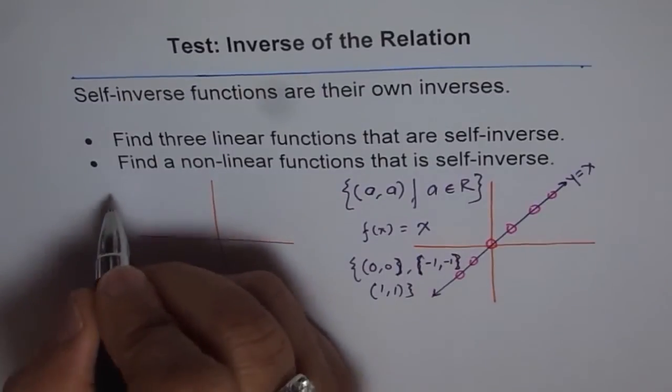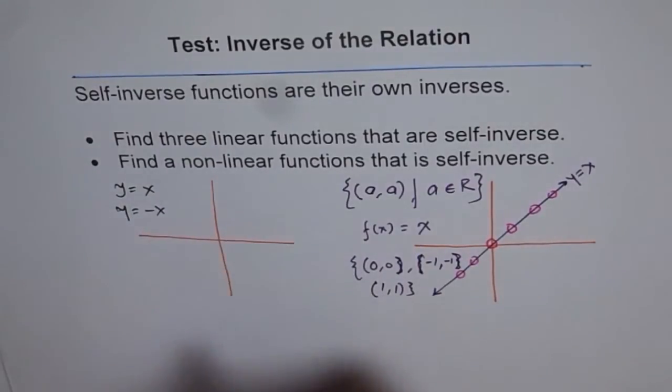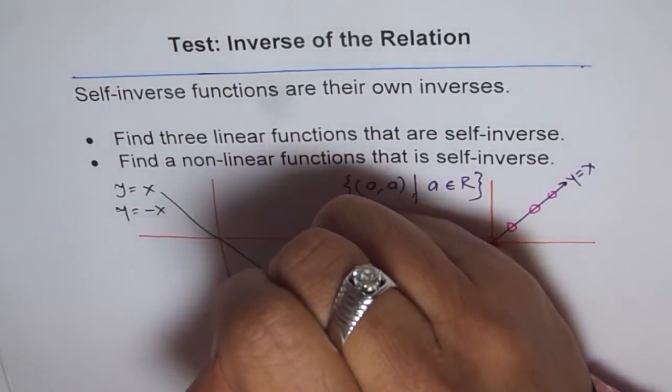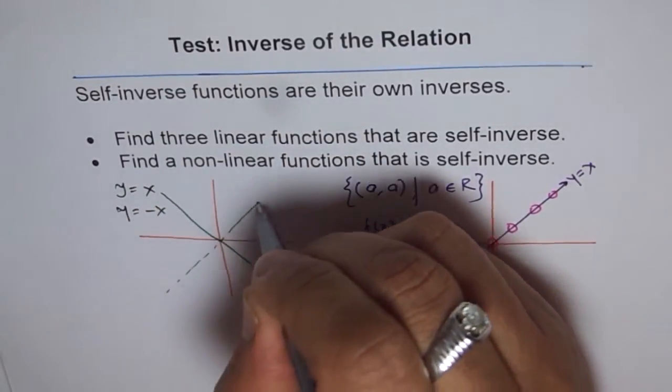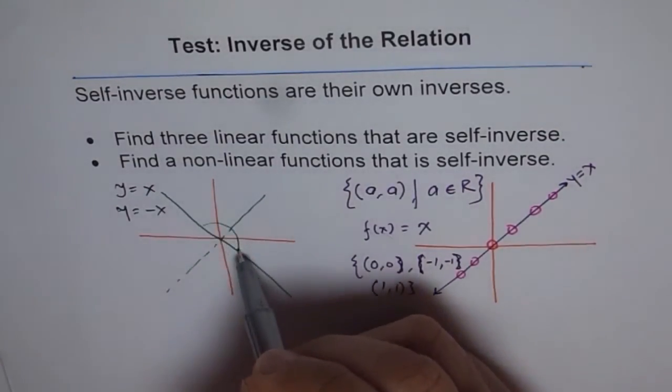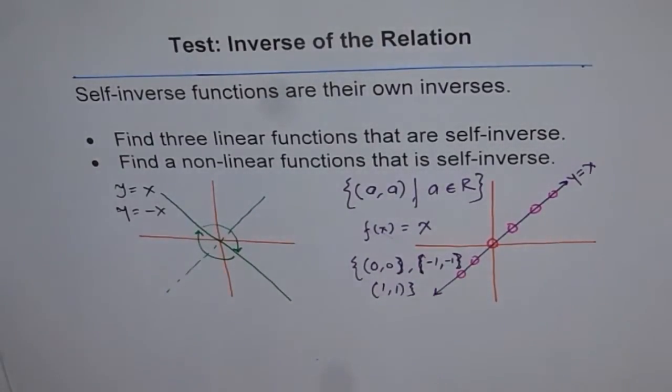we could have functions like, y equals to x, as I said, y equals to minus x. That will also be inverse of itself. For example, if you have a line like this. Now, if you reflect this line on the line y equals to x, then each point from this side will come over here. And, the point from here will go to that side. So, in this way, all the set of points will swap. And, you will have the same line. So, it is a self-inverse function.